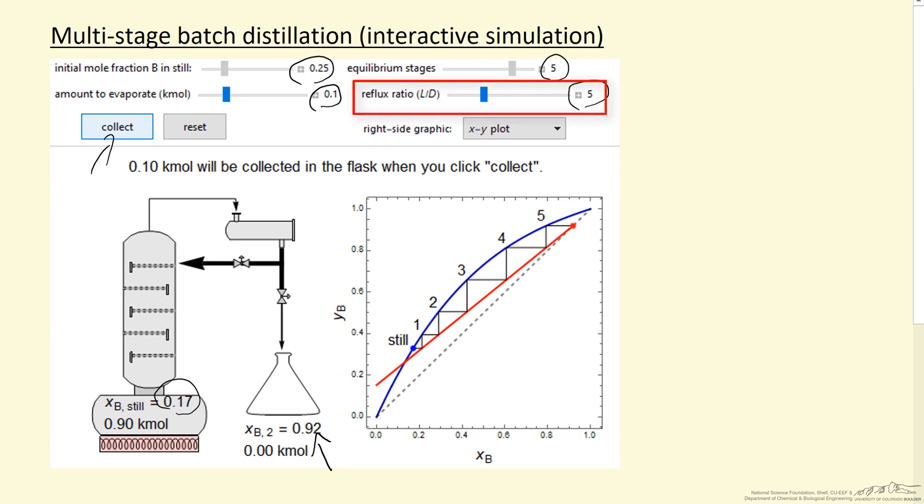We can change the reflux ratio—higher reflux ratio gives us better separation—and then we can select what we display on the right side. Right now, I've selected the x-y plot, but I could select the temperature x-y plot.